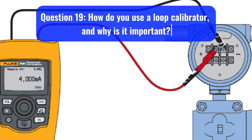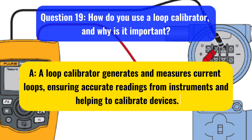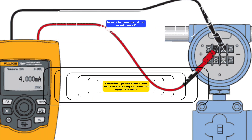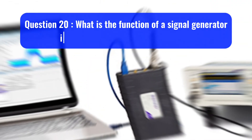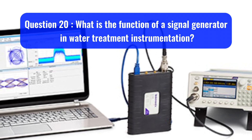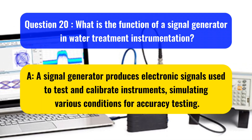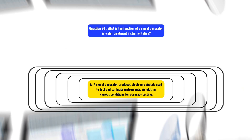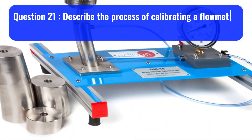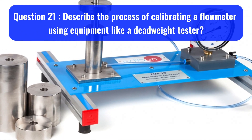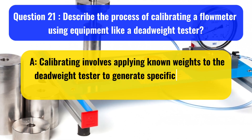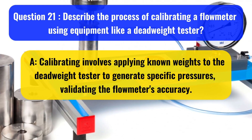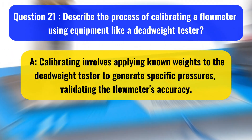Question 19: How do you use a loop calibrator and why is it important? A loop calibrator generates and measures current loops, ensuring accurate readings from instruments and helping to calibrate devices. Question 20: What is the function of a signal generator in water treatment instrumentation? A signal generator produces electronic signals used to test and calibrate instruments, simulating various conditions for accuracy testing. Question 21: Describe the process of calibrating a flow meter using equipment like a deadweight tester. Calibrating involves applying known weights to the deadweight tester to generate specific pressures, validating the flow meter's accuracy.